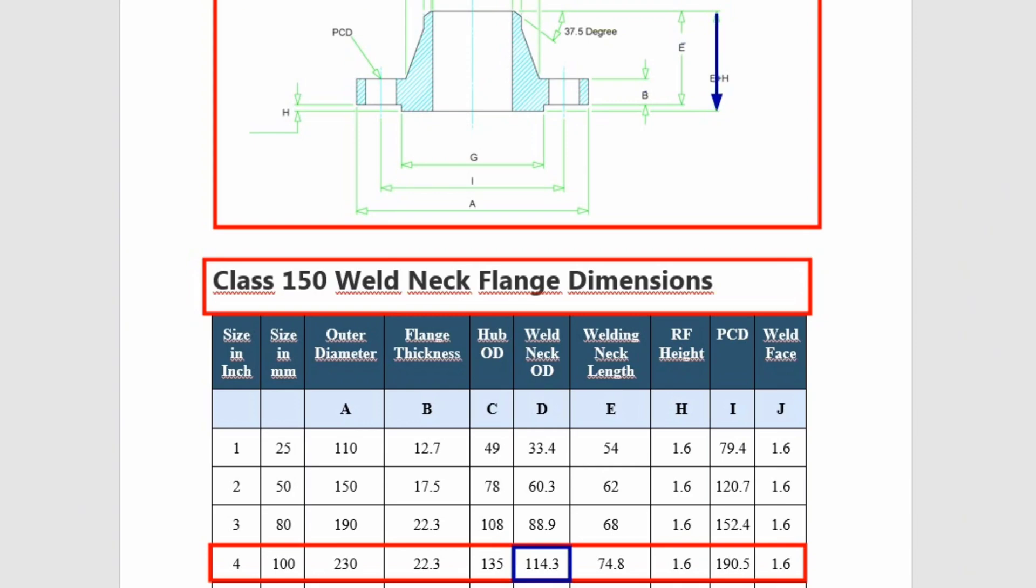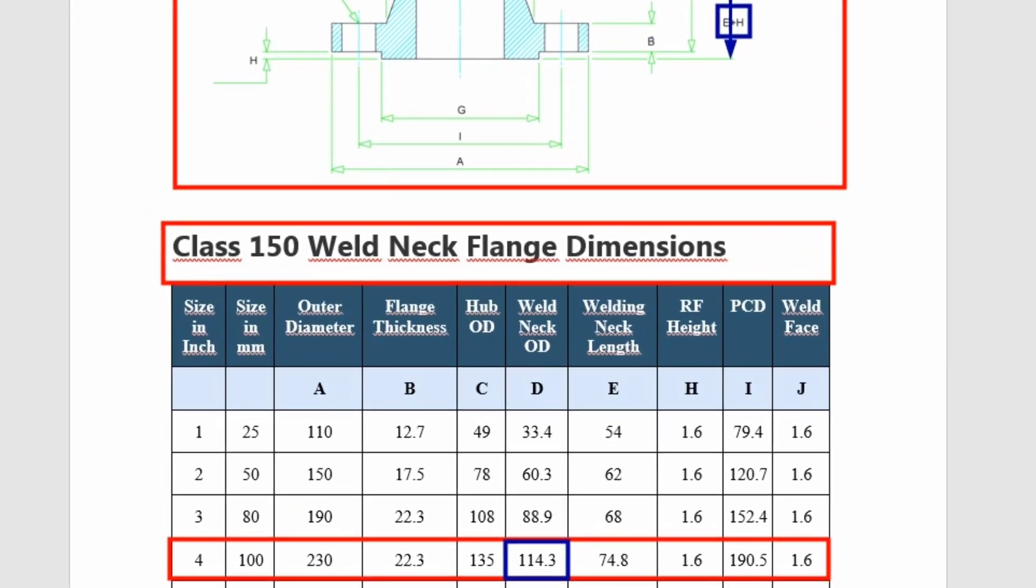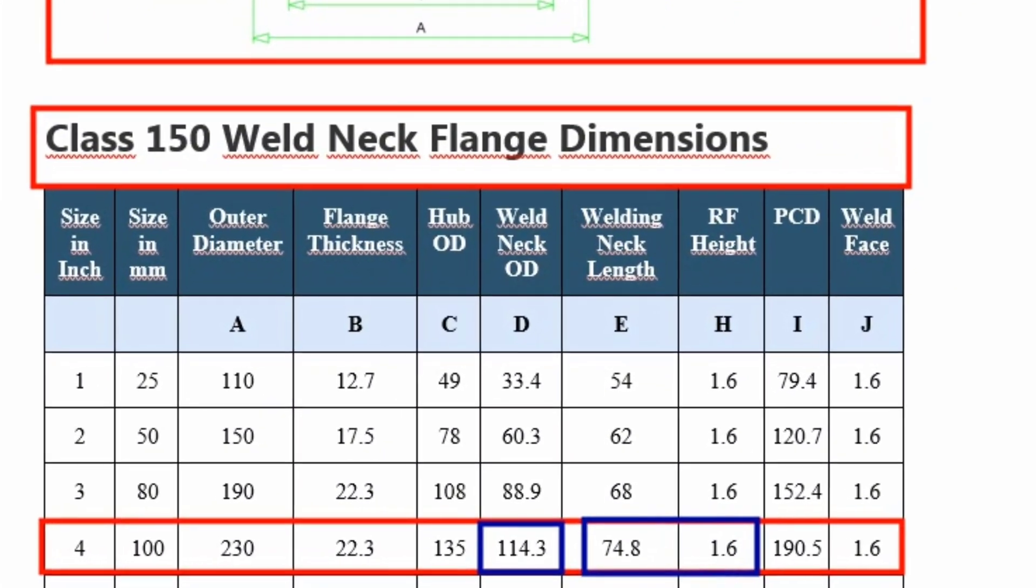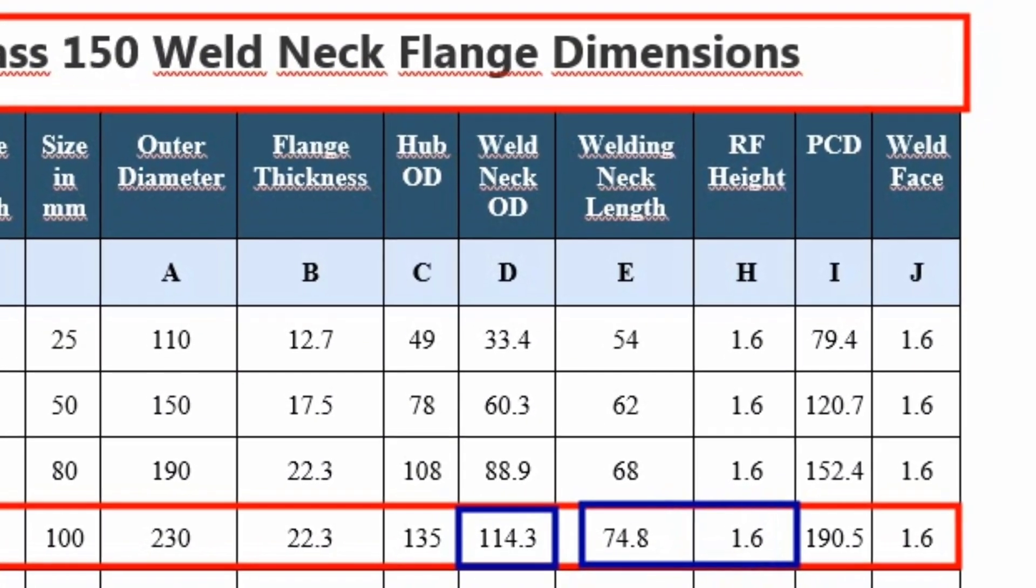Here shows the weld neck flange length plus raised face height. The length of weld neck flange and raised face height will be total approximately 76 millimeters.